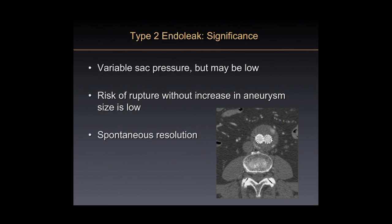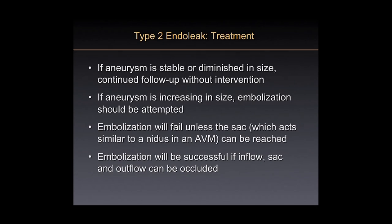Not all type 2 endoleaks are alike. Studies show many type 2 endoleaks do have systemic arterial pressure within the sac, but not all do. Those with systemic pressure are more likely to enlarge after endovascular graft placement compared to those of low pressure. Everyone agrees that type 2 endoleaks are reasonably benign, and if the aneurysm does not increase in size or diminishes, you can continue observation. It's patients who increase the sac by 5 millimeters or more where some type of intervention is warranted.